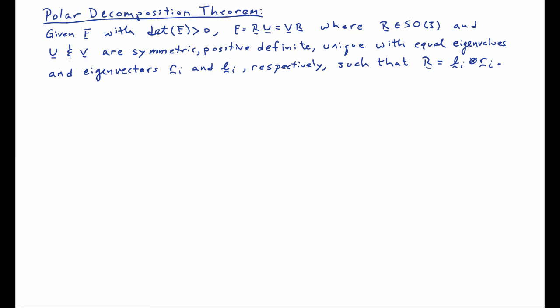The polar decomposition theorem states that if we have a second order tensor F whose determinant is positive, it can be written as the product of a rotation tensor R and a symmetric positive definite tensor, either U or V, depending on which side of R we do the multiplication. U and V have the same eigenvalues, but their eigenvectors differ. The eigenvectors of U are R_i, and the eigenvectors of V we'll call L_i, respectively.